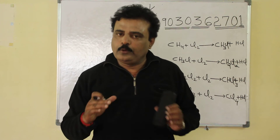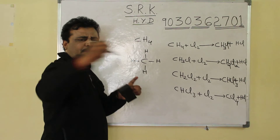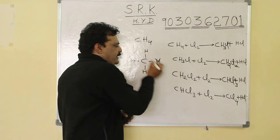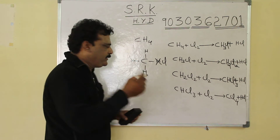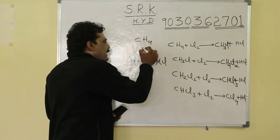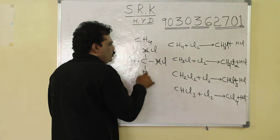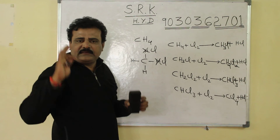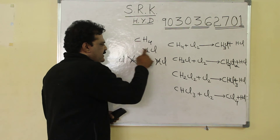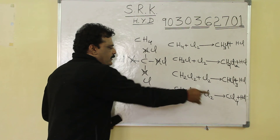Here is the visual trick — look at the board. I have drawn the methane molecule structure. Remove one hydrogen atom and write Cl — you get CH3Cl, the first product. Remove another hydrogen and write Cl — second product CH2Cl2. Remove a third hydrogen and write Cl — third product CHCl3. Write the fourth Cl — fourth product CCl4, carbon tetrachloride.